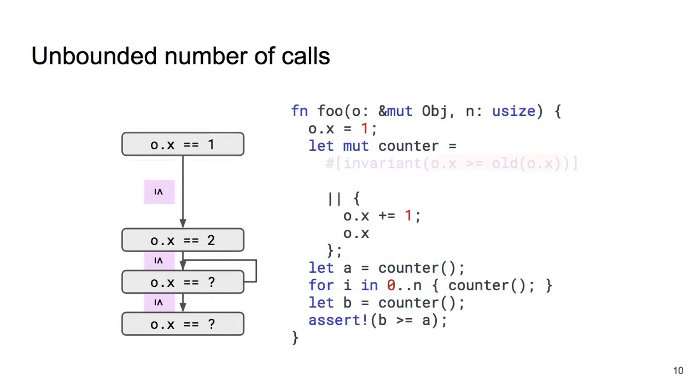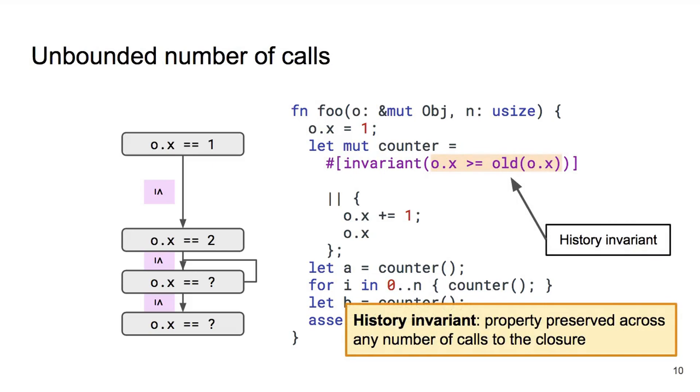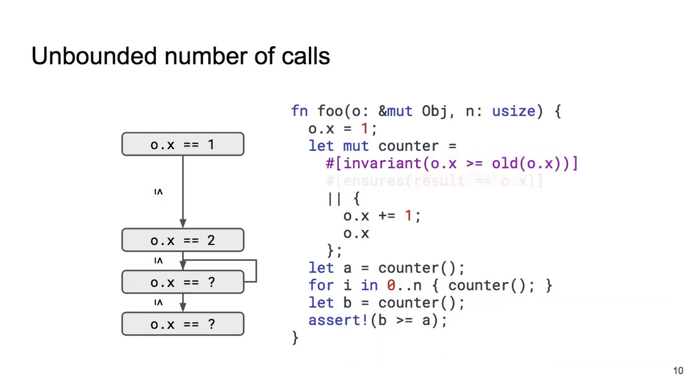We can express this fact about the closure using an invariant annotation. o.x is greater than or equal to o.x in any previous state. This is a feature we added to Prousty and we refer to such two-state invariants as history invariants. In general, these invariants can be used to establish properties preserved across any number of calls to the closure. Finally, we add a post condition to our closure which connects the values it returns to the invariant. With this we can prove the assertion. Note that even if we add a call to some bar function and allow it to call counter, we know the history invariant cannot be violated.